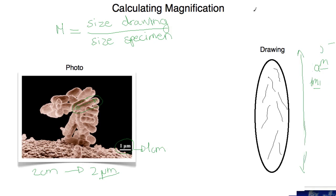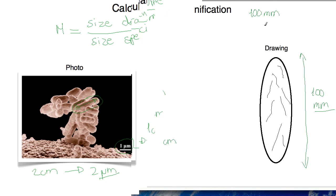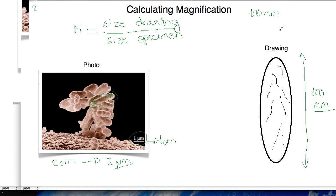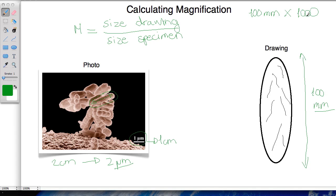So what we do is we need to convert. One millimeter is 1,000 times bigger than a micrometer. So what we do is we times it by 1,000 and we get 100,000 micrometers.